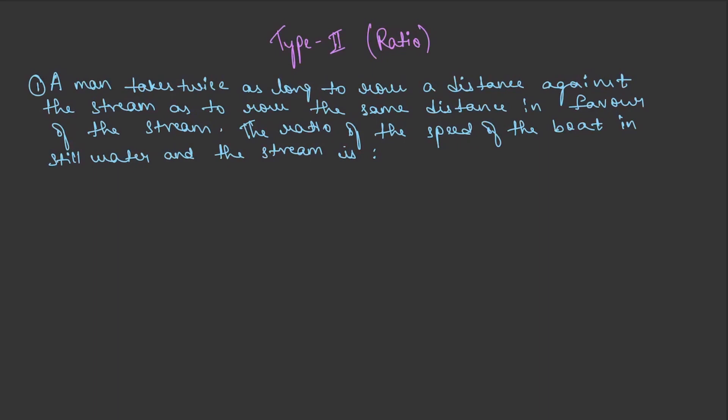Hey guys, welcome back. In this video let's solve the type 2 questions. First let us understand the question. A man takes twice as long to row a distance against the stream as to row the same distance in favor of the stream. The ratio of the speed of the boat in still water and the stream is what?